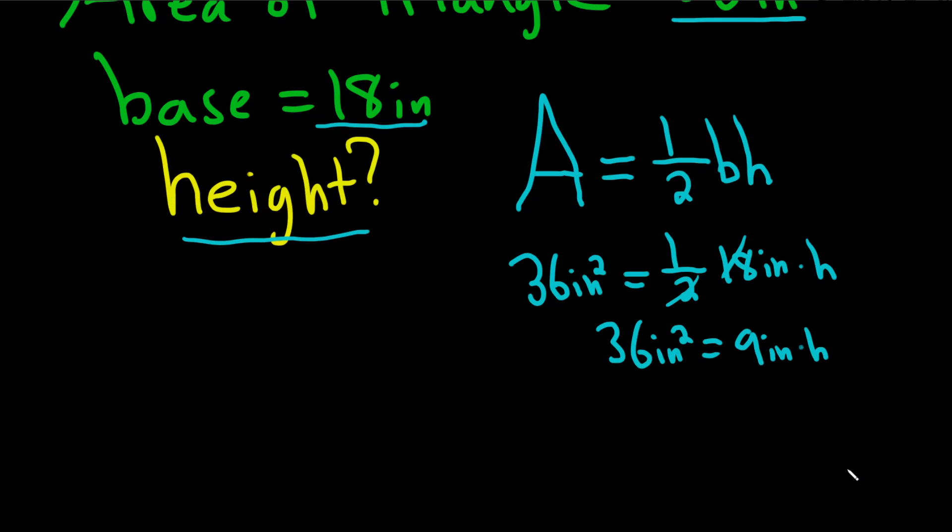Then you need to divide both sides by 9 inches, like this, draw a line, put a 9 inch on each side. 36 over 9 is 4, and then inches squared over inches is just inches. So the height is going to be 4 inches.